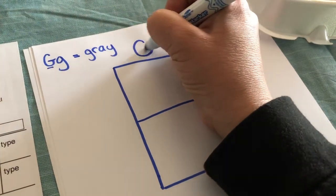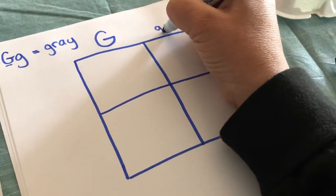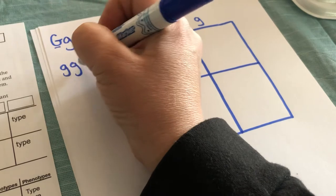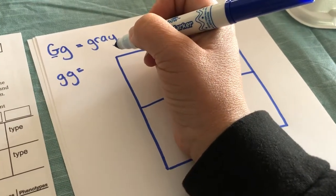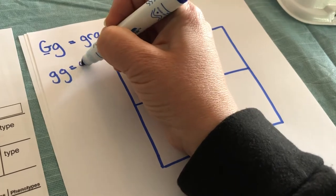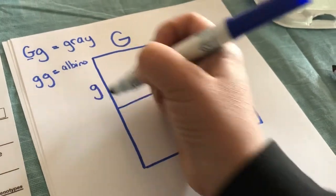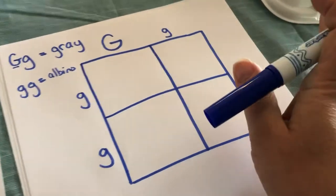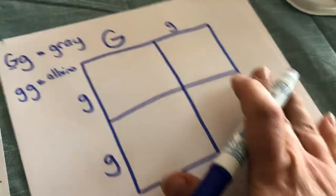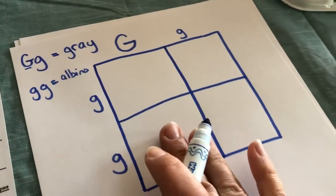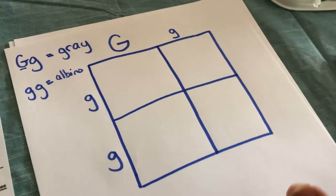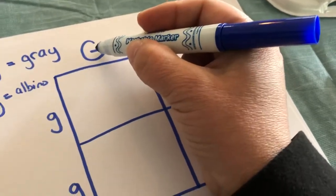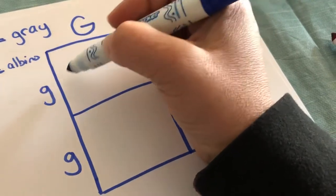I'm going to put the first two alleles for the female parent at the top. Along the side, I've got the male mouse. His alleles are lowercase g, lowercase g. He is pure for being albino or white fur. I'm going to put his genes along the side. It's time to cross them.